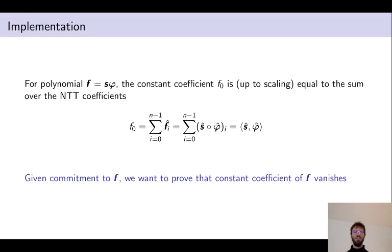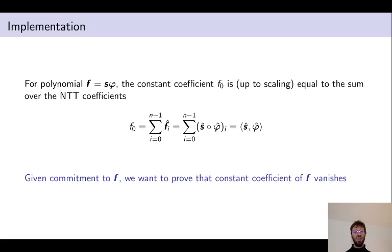What all of this means is that if the verifier can compute a commitment to F from the commitment to S given in the proof, we only need to prove that the constant coefficient of the polynomial F is zero in order to prove that the scalar product is zero.